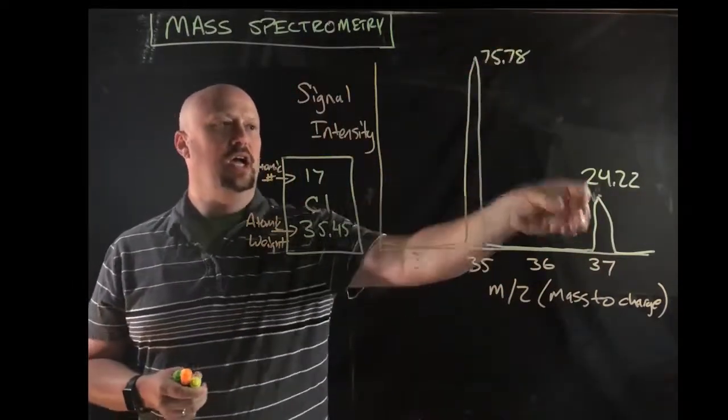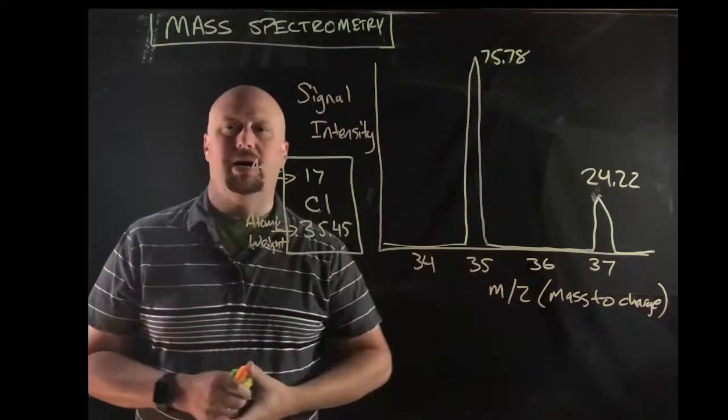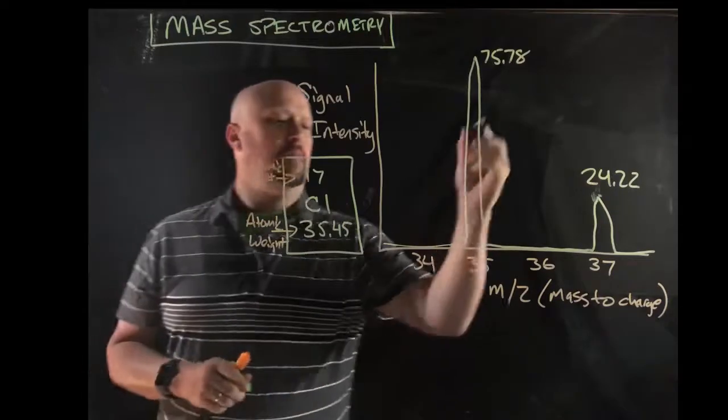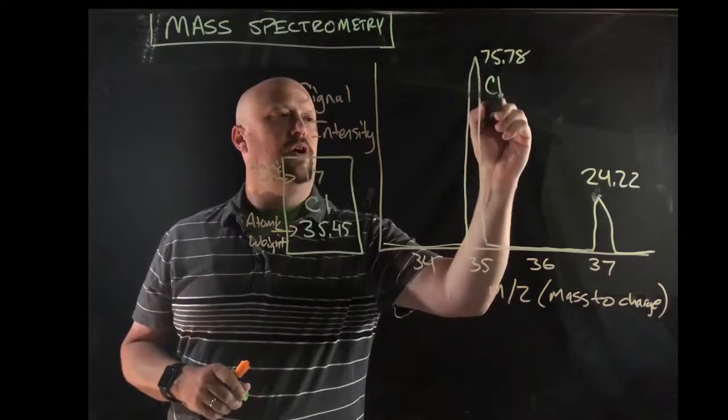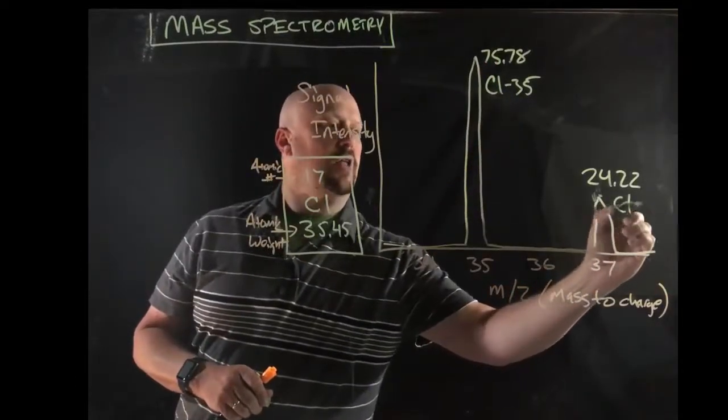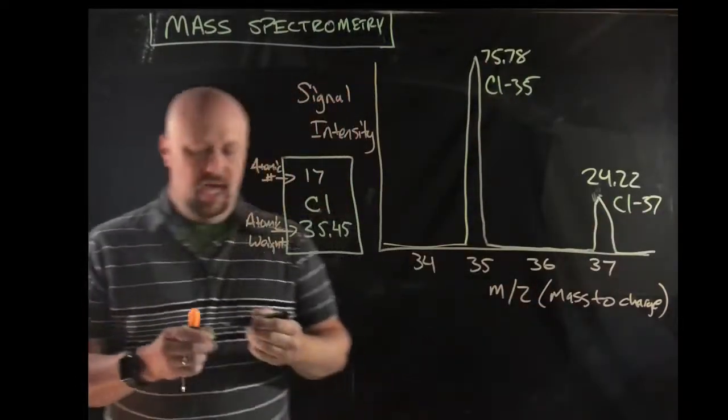So the intensity here, you can see, is a little over three times what it would be for the 37. So what does that mean? Well, it means that I've got, in this case, I've got a Cl-35 isotope. And in this case, I've got a Cl-37 isotope. And now, these are not exact numbers.